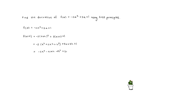Distributing the negative 2 into the first bracket gives minus 2x squared minus 4xh minus 2h squared. Collecting like terms, since there are no other x squared or xh terms, f of x plus h equals minus 2x squared minus 4xh minus 2h squared plus 3x plus 3h plus 1.